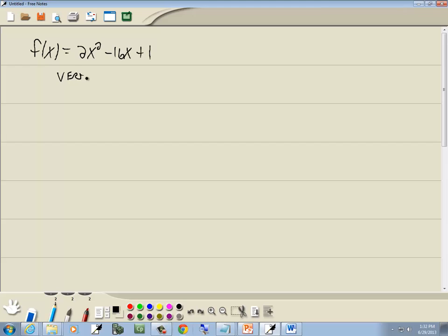We're going to have to use the vertex formula on this problem because it's not in standard form. Our first step, identify a and b. Well, a is the number before your x², which is 2, and b is the number before your x, which is -16.